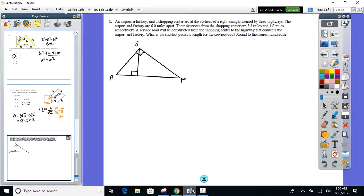You got airport, factory, shopping center—A for the airport, F for factory, S for the shopping center. It's a right triangle. The airport and the factory are 6.0 miles apart, so airport to factory is 6.0 miles. Their distances from the shopping center are 3.6 and 4.8 miles respectively. From the airport to the shopping center is 3.6, because when it says respectively whatever came first goes first. And 4.8 is to the factory from the shopping center.